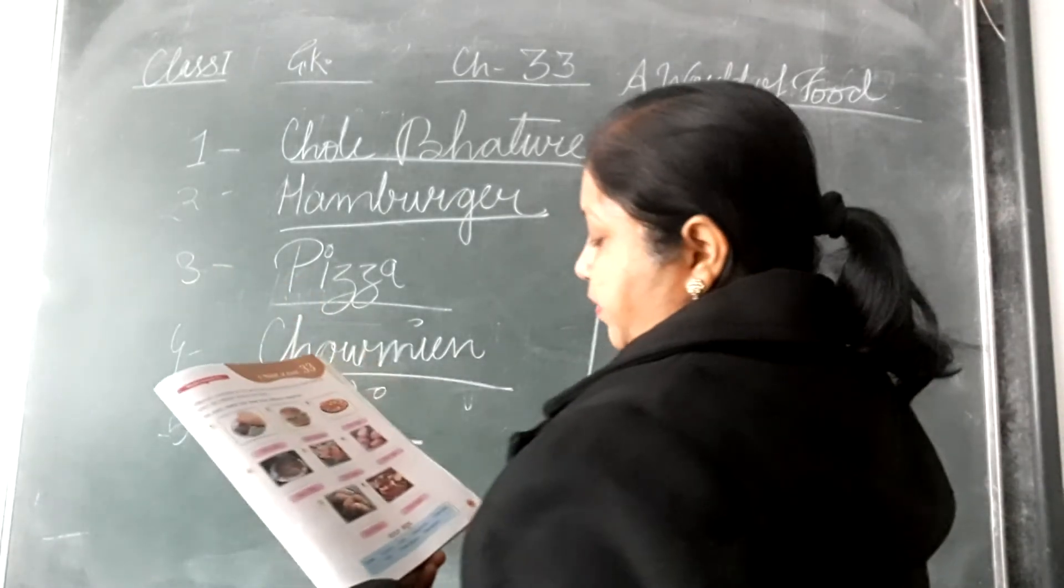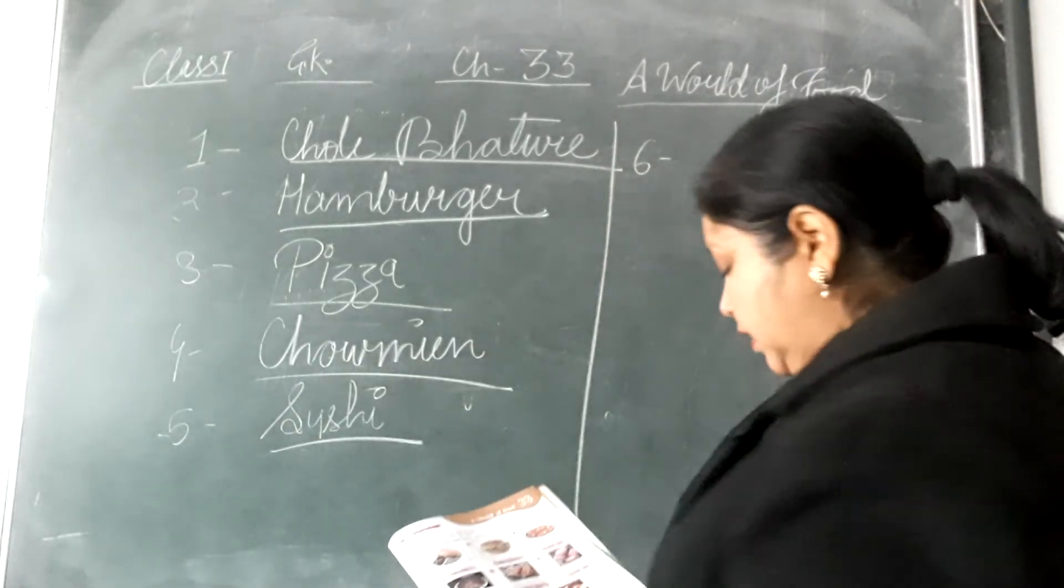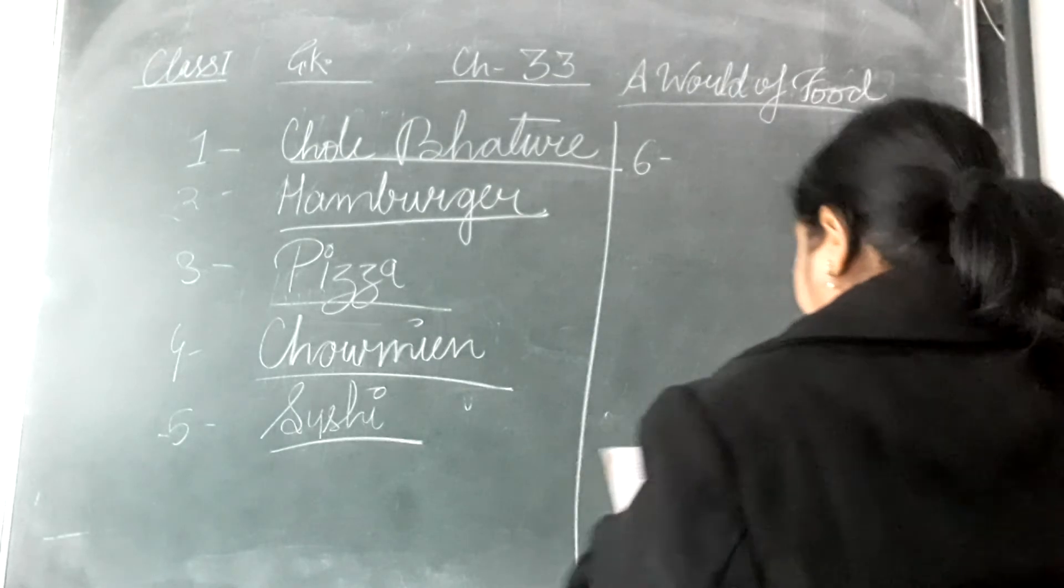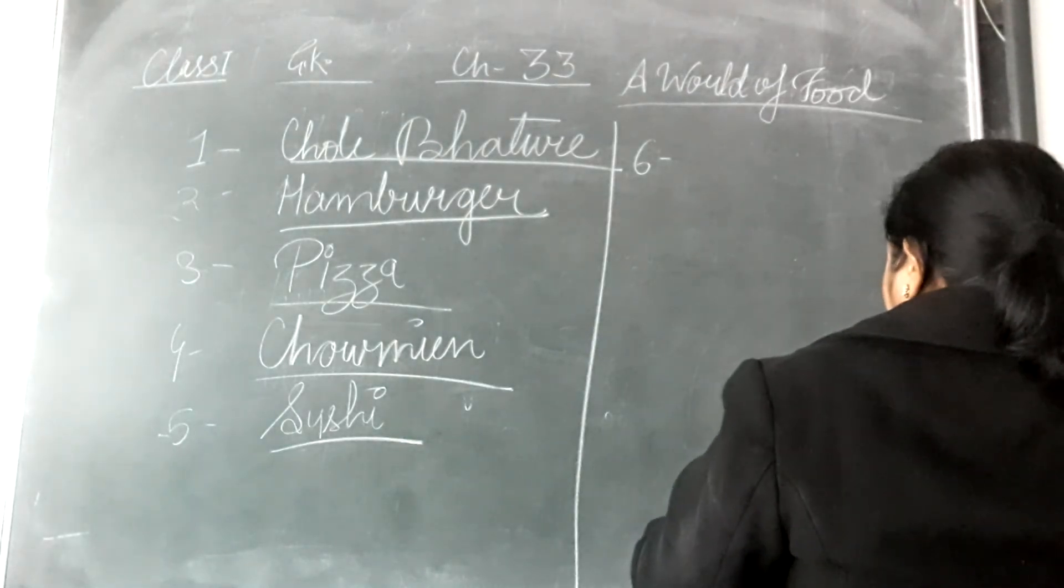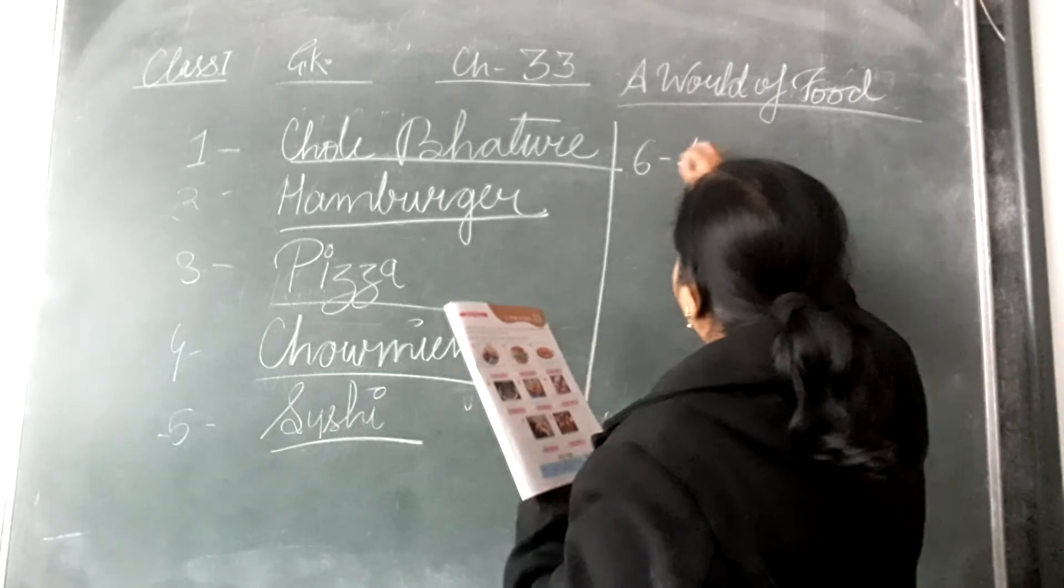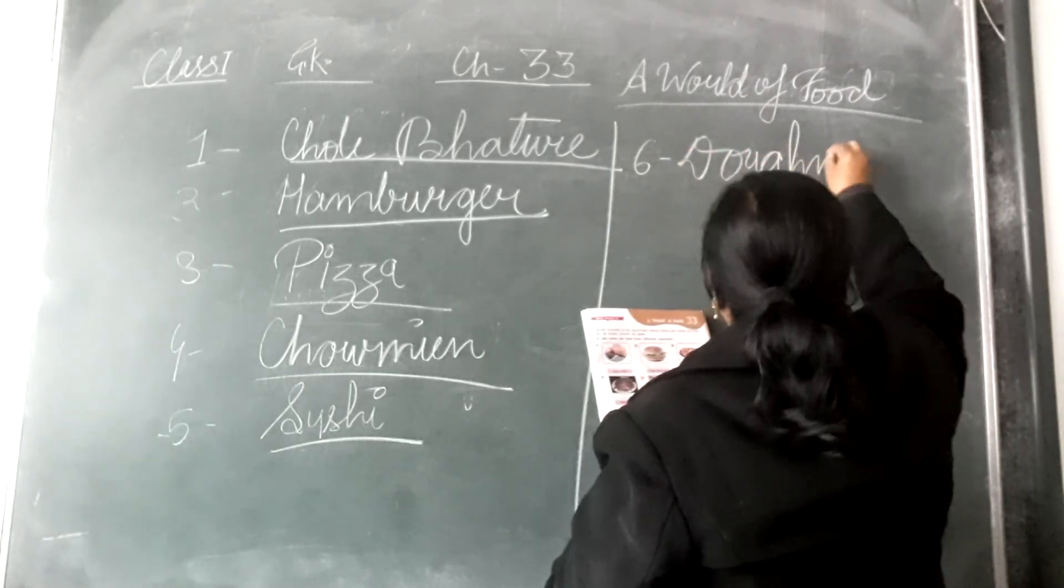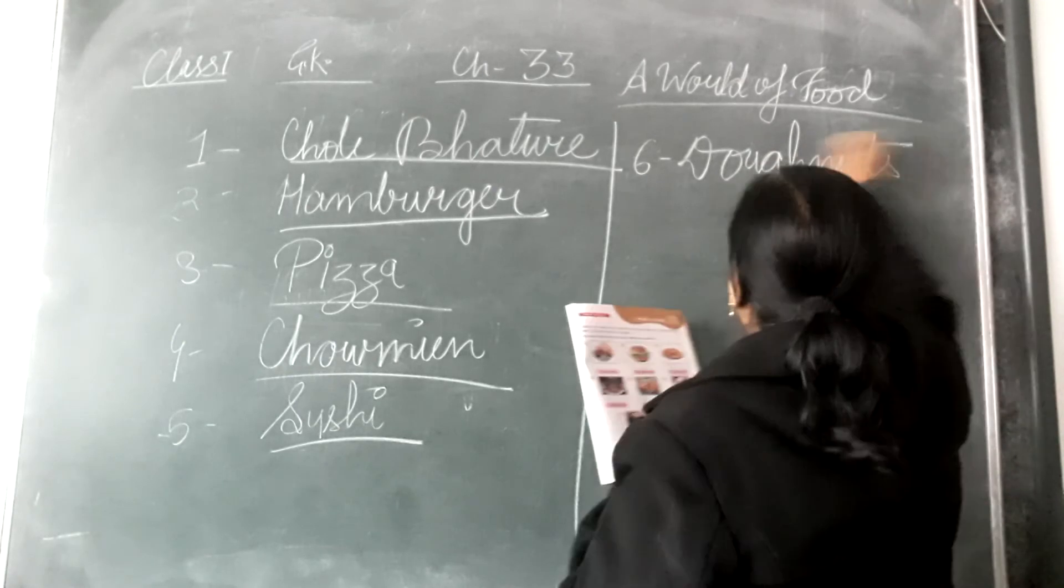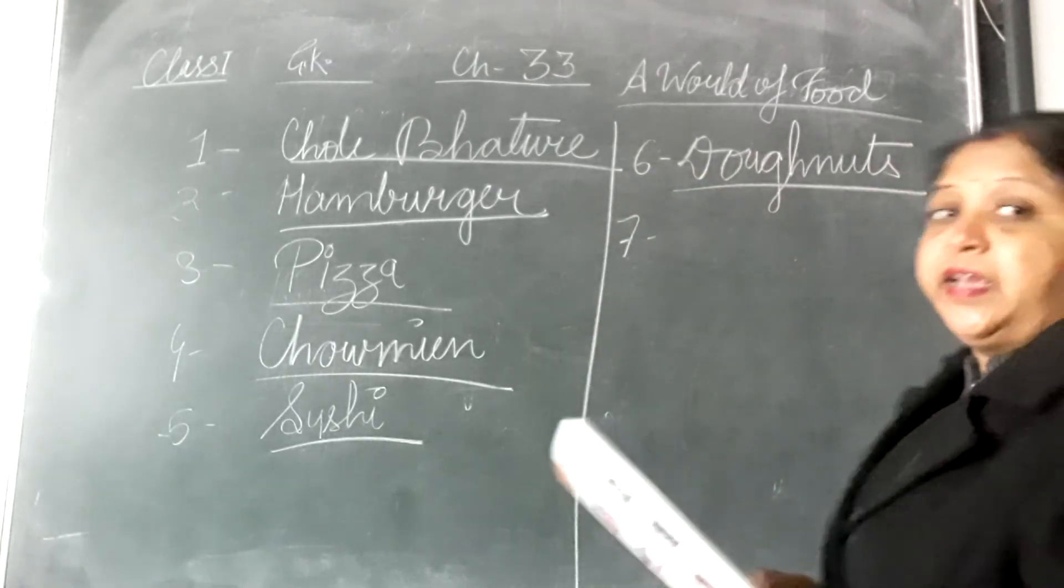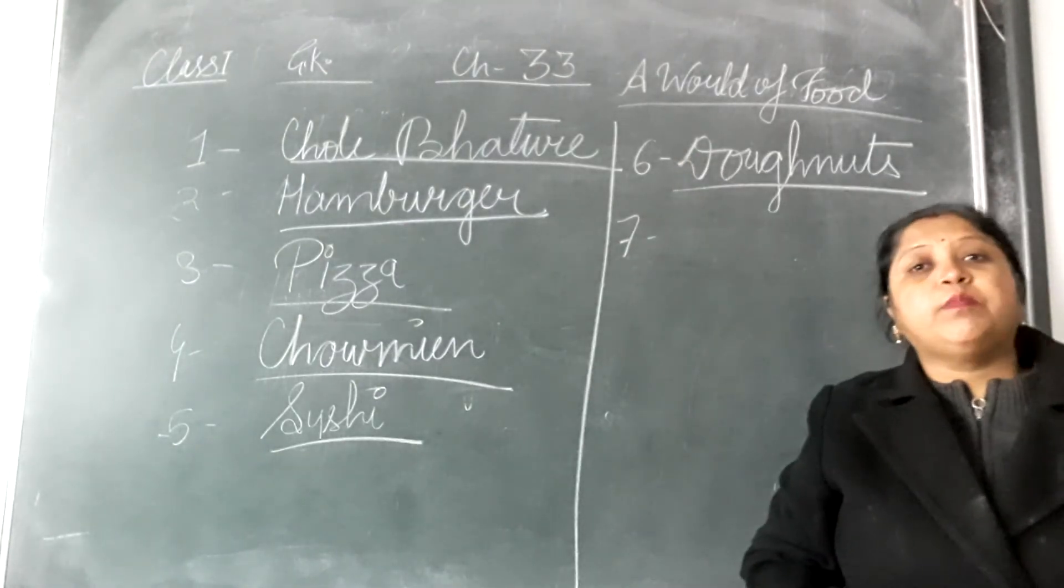Sixth number from USA, America's famous dish. What is this? Donuts. D-O-U-G-H-N-U-T-S. So next time you purchase from the market, remember this is from USA.